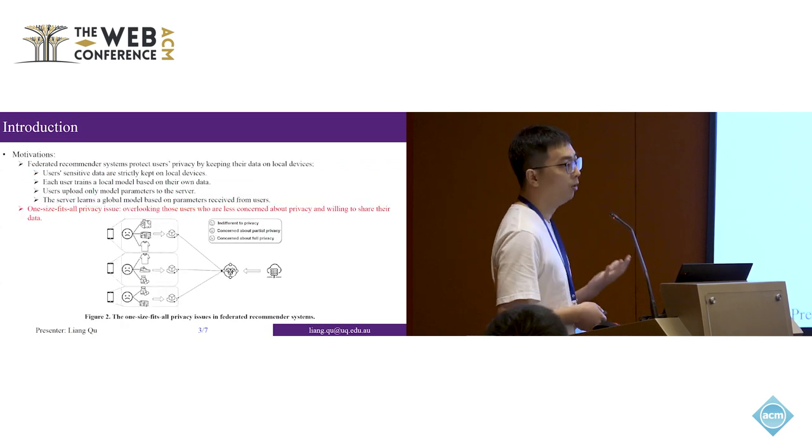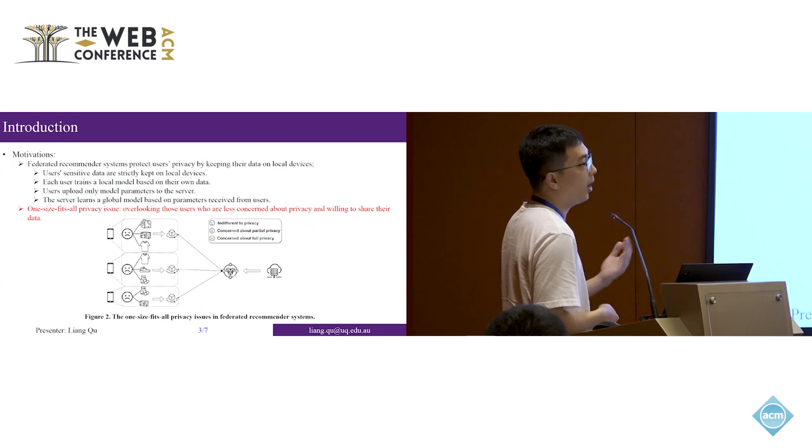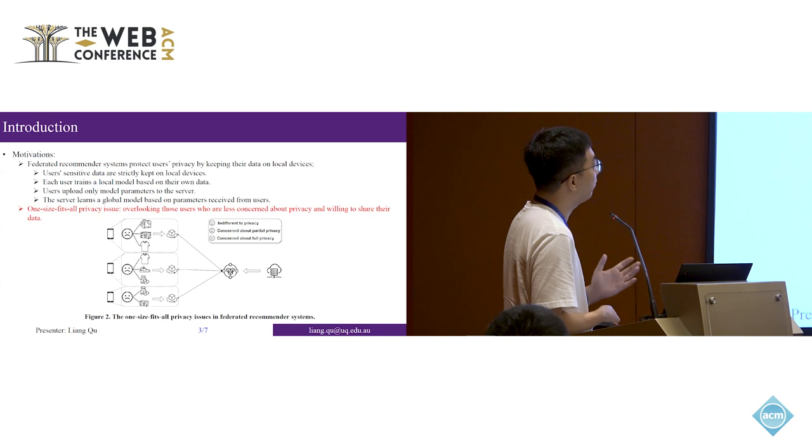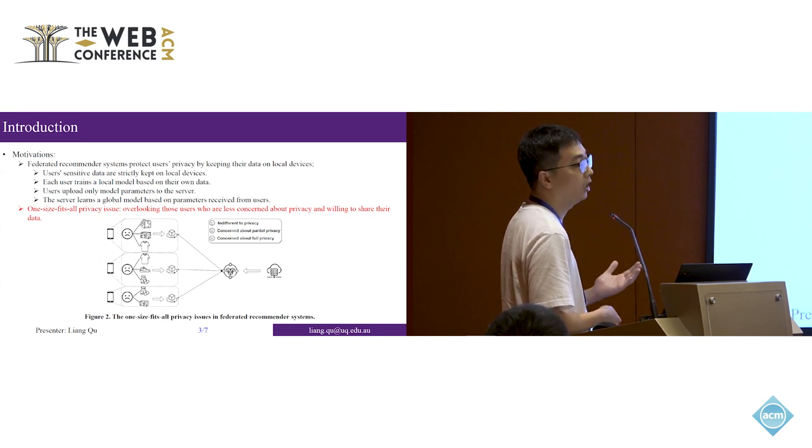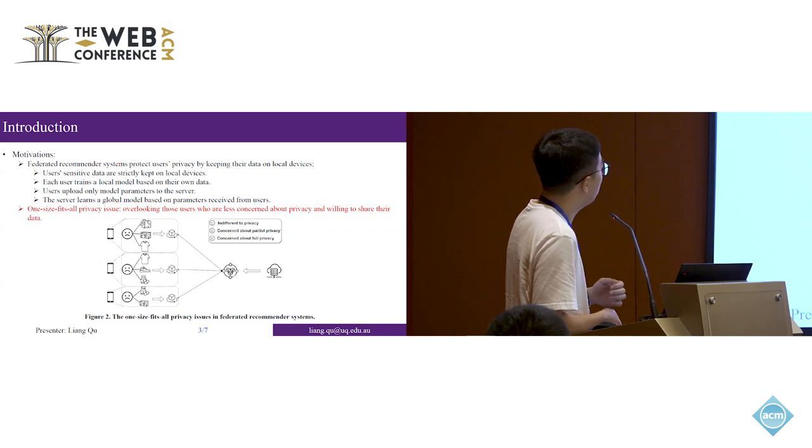In recent years, to address this problem and inspired by federated learning's success in privacy-preserving machine learning tasks, many studies have tried to apply federated learning to recommendation systems. Here, I introduce the key idea of federated recommendation architecture. The idea is that it structurally keeps users' private data on their own devices. For each device, its user-item interaction data is kept here.